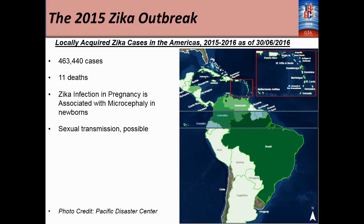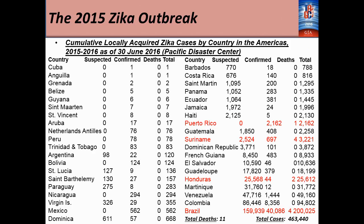Sexual transmission is also possible with Zika. I have a table here, also from the Pacific Disaster Center, showing the cumulative locally acquired Zika cases by country in the Americas as of the 30th of June this year. We have just four countries where Zika has led to deaths: Puerto Rico, Suriname, Honduras, and Brazil.